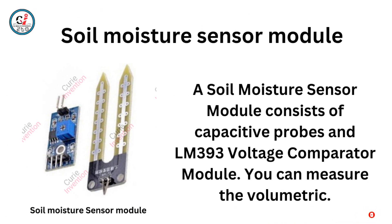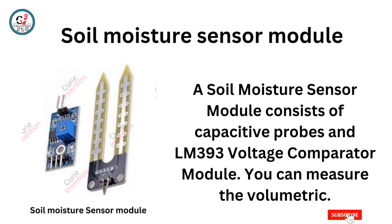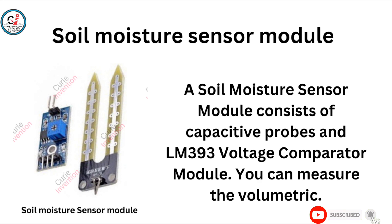Soil Moisture Sensor Module. A Soil Moisture Sensor Module consists of capacitive probes and an LM393 voltage comparator module. You can use it to measure the volumetric soil moisture content.